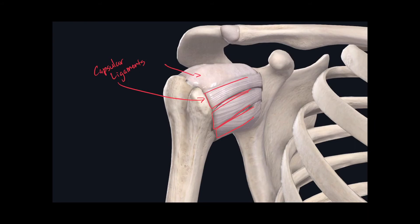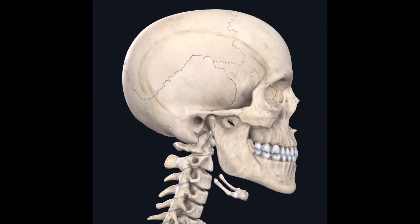Those are the three types of ligaments found in synovial joints. Now I want to discuss articular discs. Articular discs act as cushions between articular surfaces. For example, in the temporomandibular joint, where the mandible and the temporal bone articulate, there is an articular disc made of fibrocartilage on either side of the mandible at the head of the mandible. Its purpose is to reduce friction and act as a cushion between the two bones.